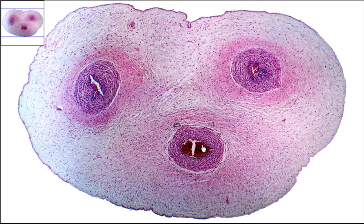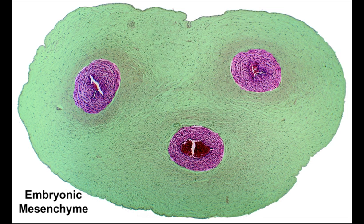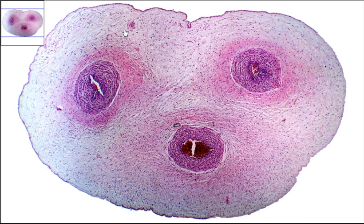So everything outside of these three blood vessels is going to be mesenchyme. All this mesenchyme is going to be a precursor for the connective tissues we'll be talking about later.